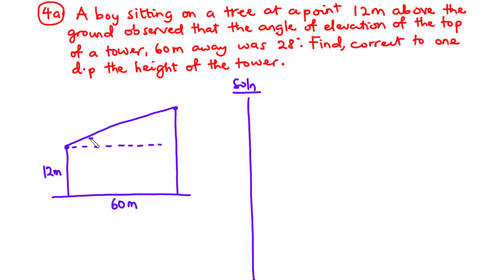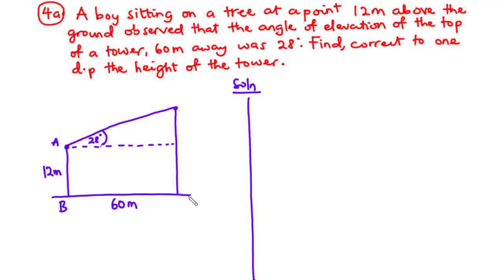Now this 28 degrees is in reference to the horizontal, that is the horizontal line of sight. Now at this point, we are asked to find, correct to one decimal place, the height of the tower. So let's label this diagram. We have this point to be A, this is B, this is C, this is D, and then this is E.